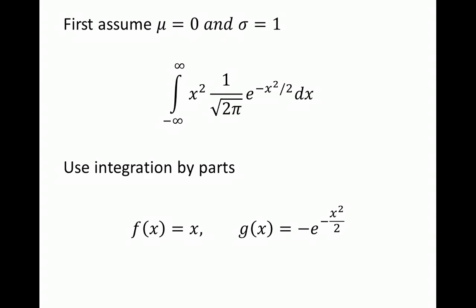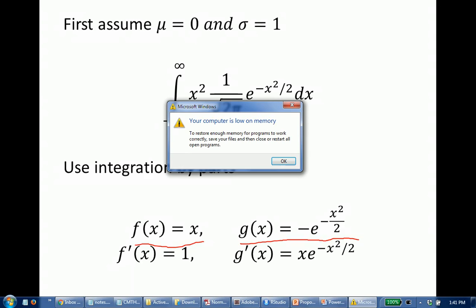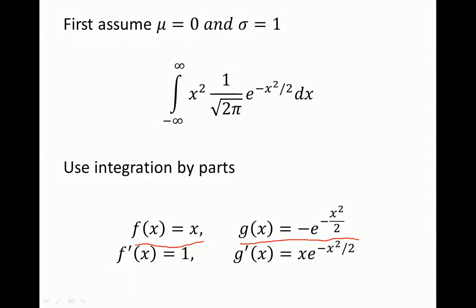Let's define f of x equal to x and g of x equal to negative e to the power of minus x squared over 2. We also need to know the derivatives. The derivative of f of x is just 1, and the derivative of g of x is x times e to the power of negative x squared over 2. You can check that the antiderivative of this is the g function defined here.